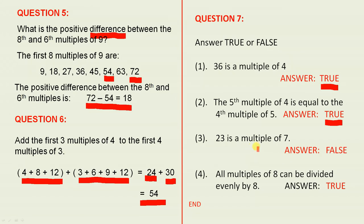The next one: 23 is a multiple of 7. Let's do our 7 times tables: 7 × 1 = 7, 7 × 2 = 14, 7 × 3 = 21, 7 × 4 = 28. So we don't get 23. So 23 is not a multiple of 7. So that's false.